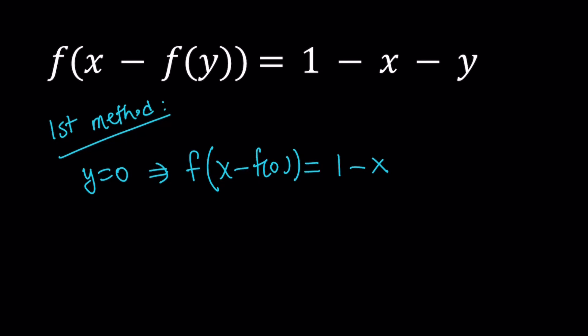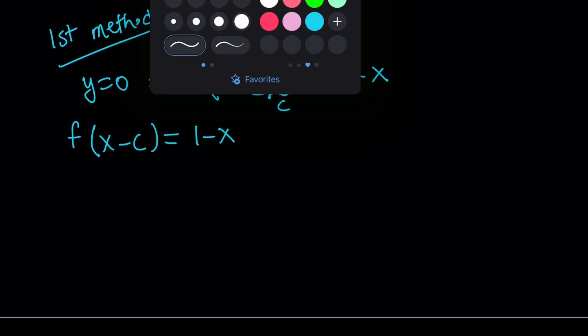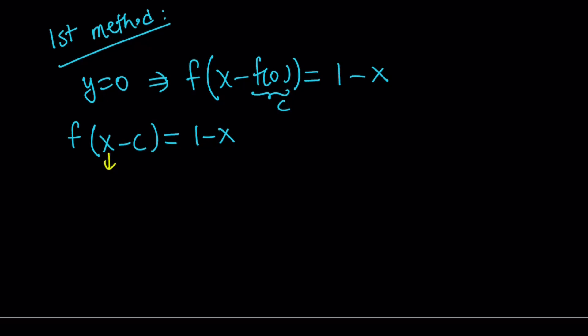Now f(0) is a constant and by the way I forgot to say this function is defined from reals to reals and it's continuous. Anyways, f(0) is a constant. So let's call it c and this gives us f(x - c) = 1 - x. Now obviously we want to get an expression for f(x) so it makes sense if we replace x with x + c here.